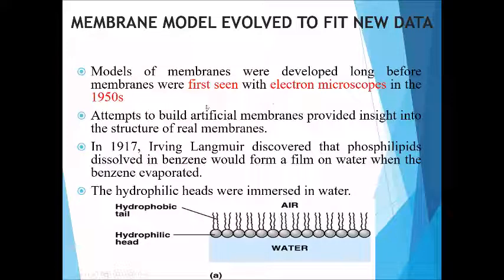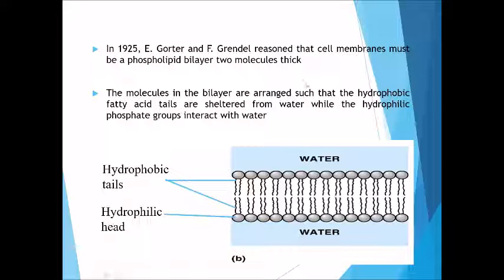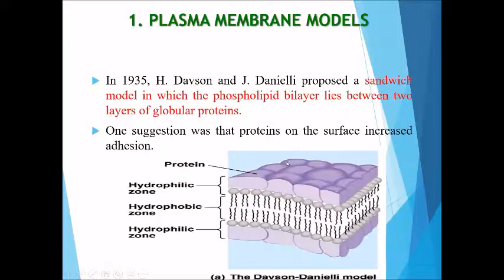Attempts to build artificial membranes provided insight into the structure of cell membranes. In 1917, Langmuir discovered that phospholipids dissolved in benzene would form a film on water when the benzene evaporated. This showed how the hydrophilic heads look when immersed in water — they form a film after the benzene evaporates. Gorter and Grendel reasoned that the cell membrane must be a phospholipid bilayer, with hydrophobic fatty acid tails sheltered from water while the hydrophilic parts interact with water.